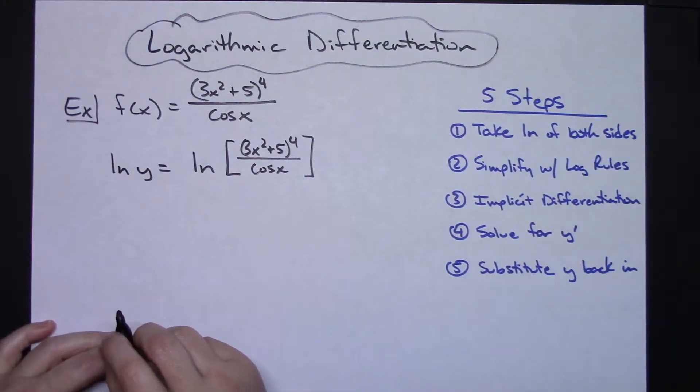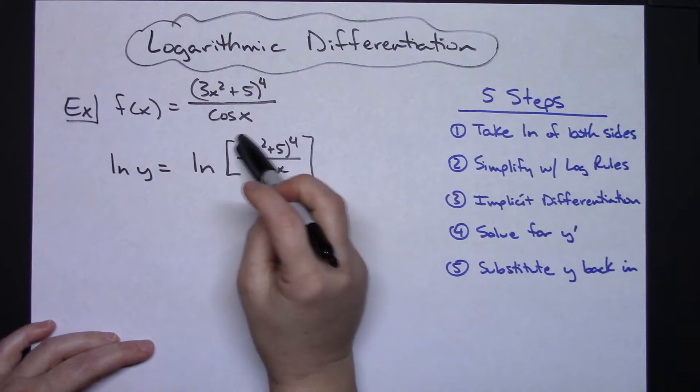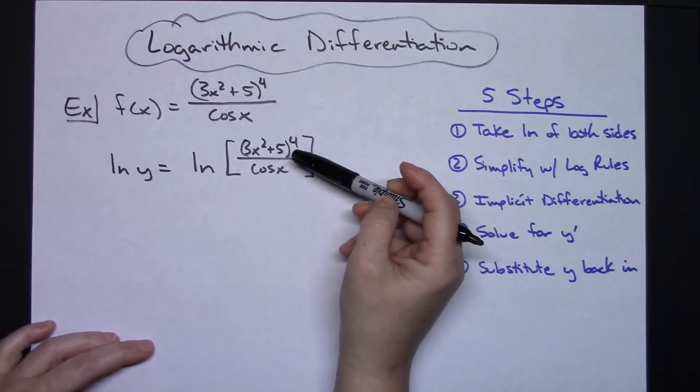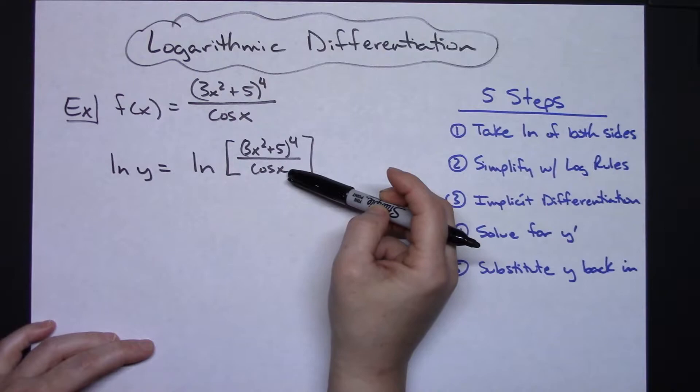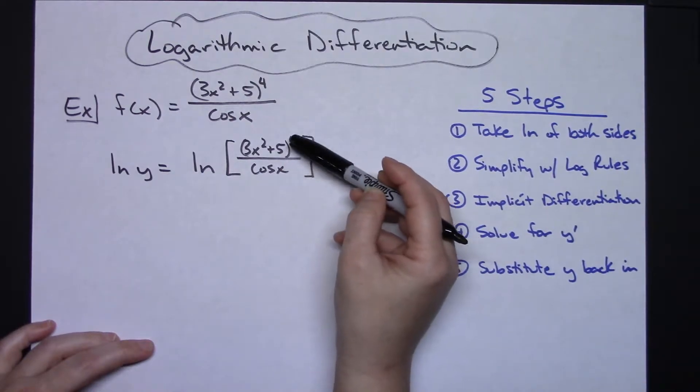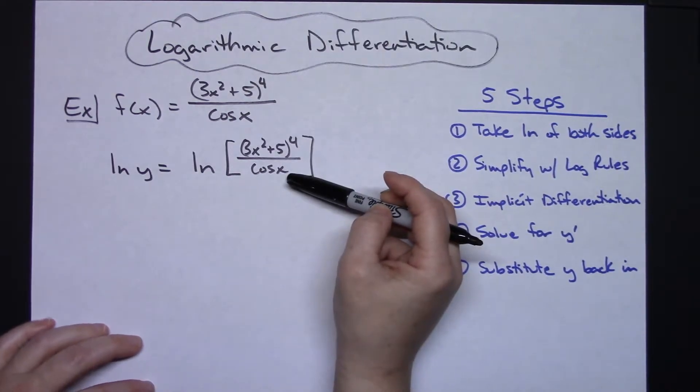Step 2 says to simplify using my log rules. Over here I have a compressed log showing a quotient. So through log rules I know that I can rewrite this and expand it using subtraction.